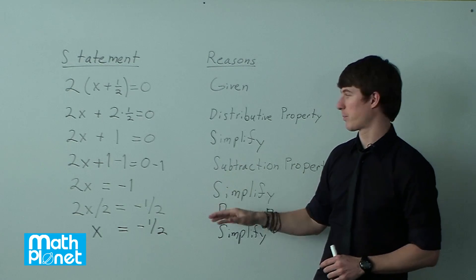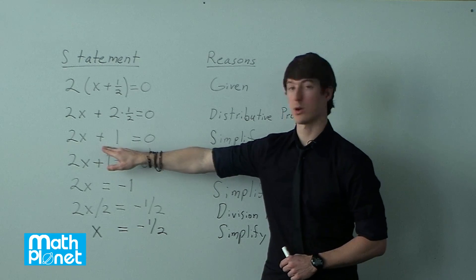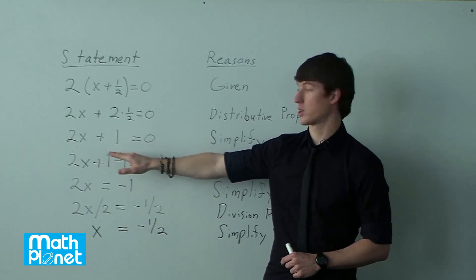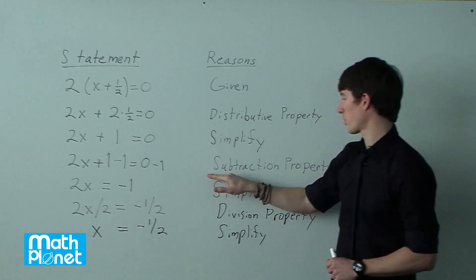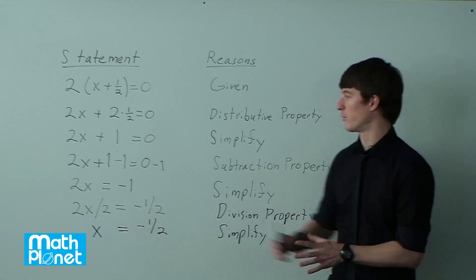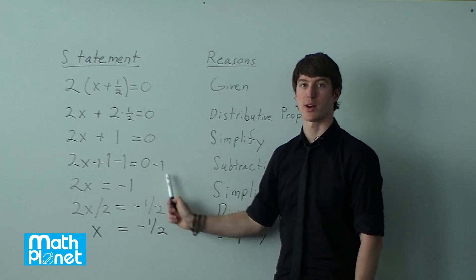The next step that we're going to do something is an inverse operation of addition. We need to get rid of this plus 1. And the inverse operation of addition is subtraction. So we're going to use the subtraction property. If we subtract 1 from here, we have to subtract 1 from the other side.